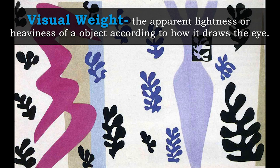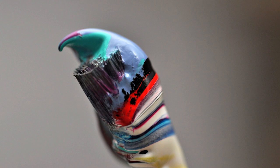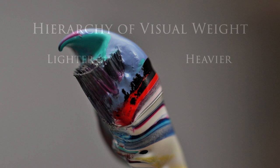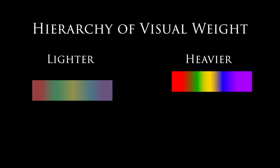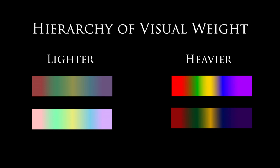In addition to actual weight, there is such a thing as visual weight — the apparent lightness or heaviness of a shape. Visual weight is how someone achieves balance in a 2D composition. It doesn't make sense to actually weigh out the amount of paint on one side of a canvas; what makes the most sense is to measure the visual impact. Heavier objects tend to be more saturated — the more neutralized or desaturated a color, the less visual weight it possesses, because it draws your attention less.